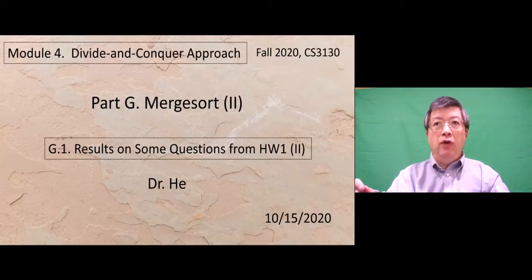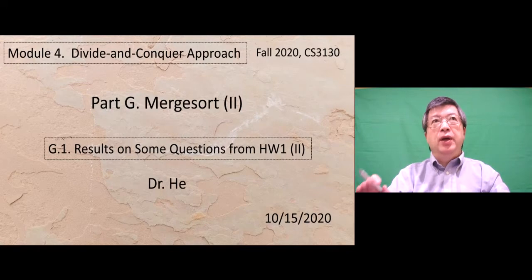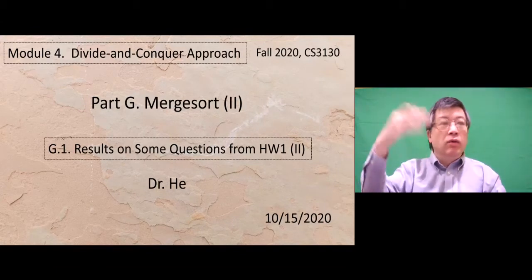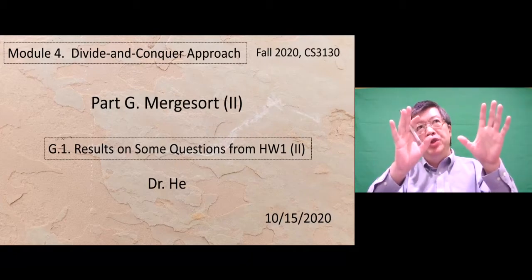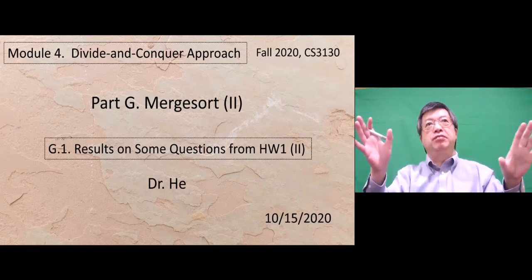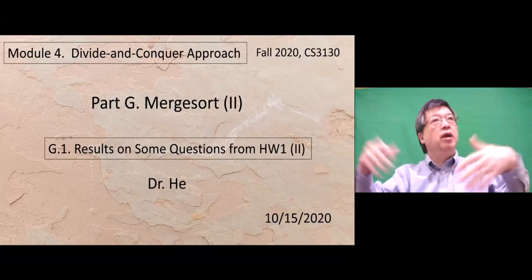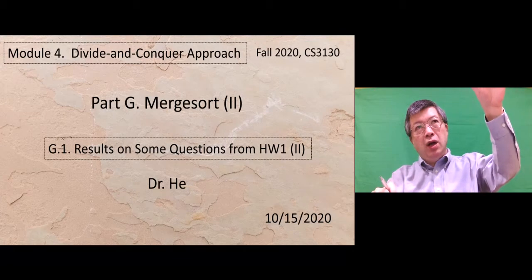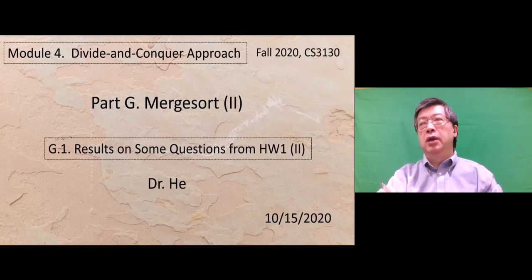We're starting part G of module 4, merge sort part 2. Because we're close to the midterm test, I want to spend some class time on problems and questions to help you prepare. That's why I split the original one class into two: the first part for question reviews, the second part for new material. This class will have three videos — the first is homework questions review part 2, then two videos to complete merge sort part 2.